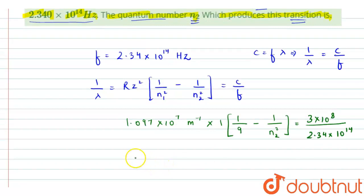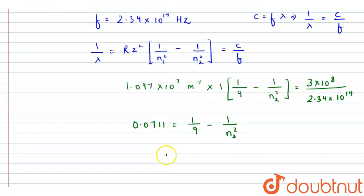From here, after solving this, we will get nearly 0.0711 = 1/9 - 1/n2². From here, if I solve further, we will get n2 nearly equal to 5.